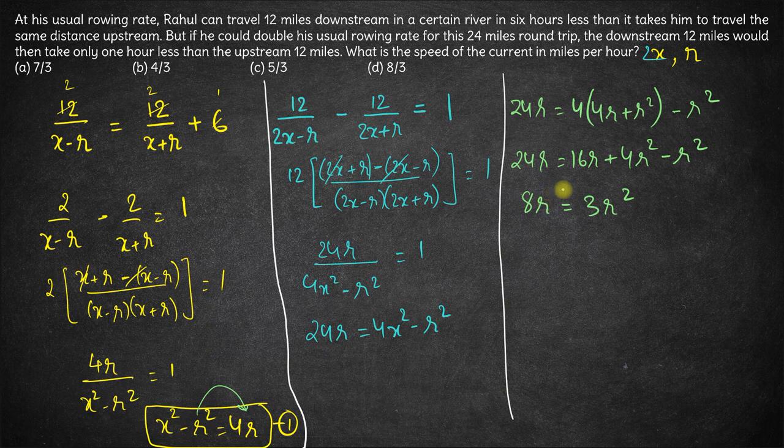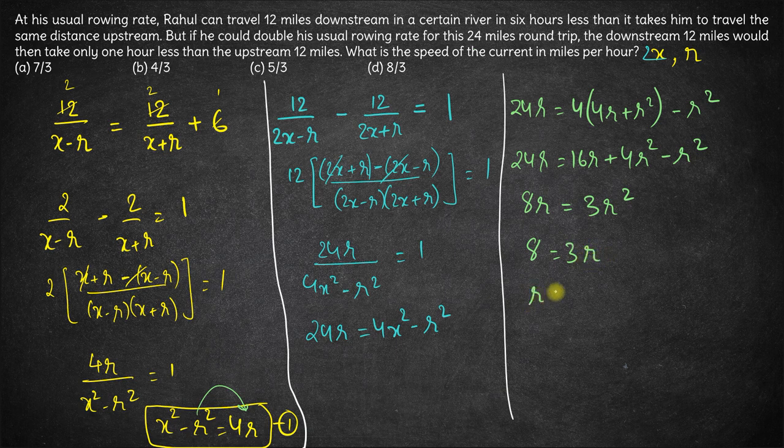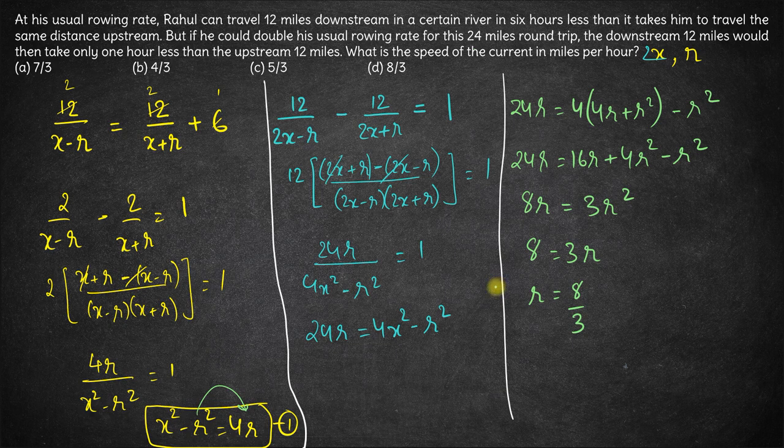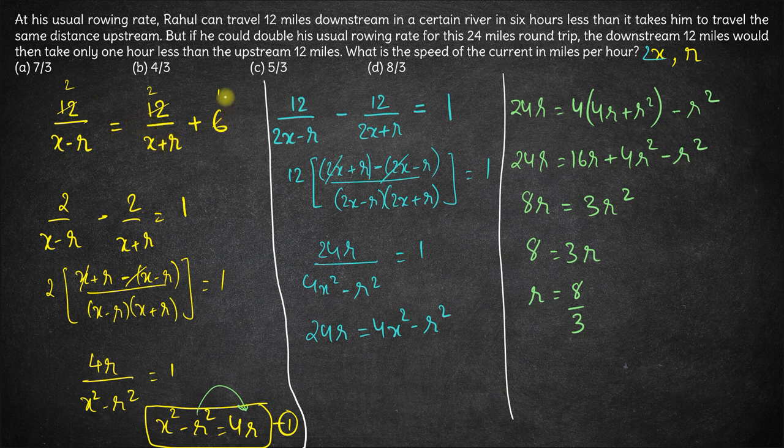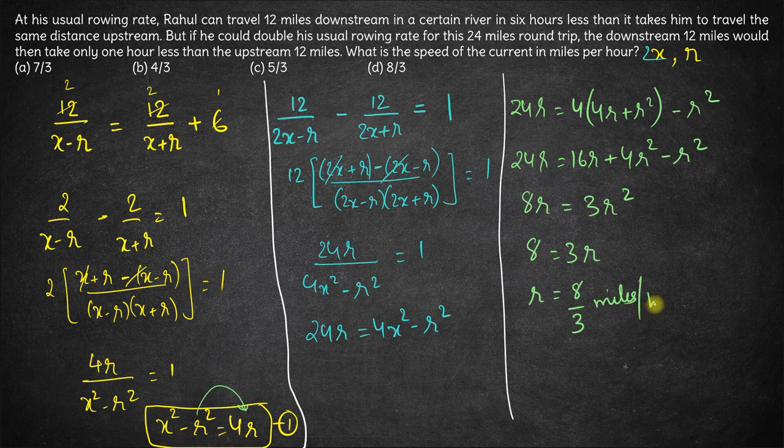Now obviously r will not be 0, so let's cancel out r. So we have 8 is equal to 3r. So r comes out to be 8 by 3. So speed of the river or current comes out to be 8 by 3. And since all the distances were in miles and all the time is in hours, this is in miles per hour.